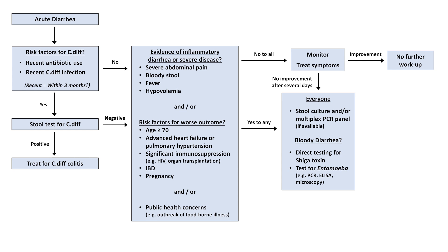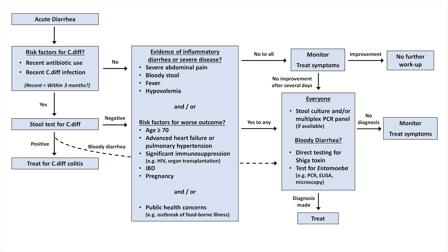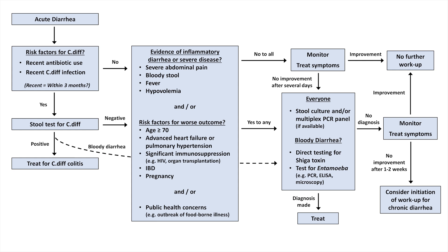Although this flowchart makes it seem like the preceding C. diff test and the subsequent tests are done sequentially, this more represents the thought process. In practice, if all these tests were indicated, they would all be ordered at once. Regarding C. diff, it only rarely causes bloody diarrhea. Therefore, in the event that the patient has bloody diarrhea, C. diff risk factors, and tests positive for C. diff, while initiating C. diff treatment I would also look at these other tests as well. If a diagnosis is made at this point, go ahead and treat. If not, monitor and treat symptoms. If the patient fails to improve after the following 1-2 weeks, consider the initiation of a workup for new onset chronic diarrhea.